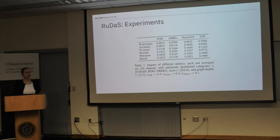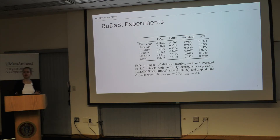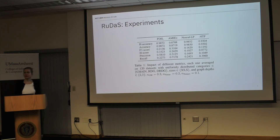We ran experiments not to evaluate the systems themselves, but to show that our dataset dimensions make sense and that systems perform very differently on different kinds of datasets. We considered four very different systems: FOIL, one of the very old exhaustive systems; AMIE Plus from the semantic web domain, tailored to knowledge graphs; and Neural LP and NTP, two of the neural systems proposed recently.